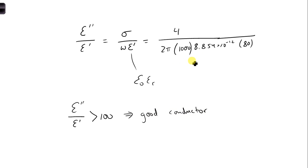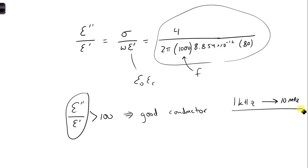If you evaluate this expression and change f, you'll find that the material acts like a good conductor. The ratio is greater than 100 from 1 kHz all the way up as we increase f to about 10 MHz. So over this entire frequency range, this ratio is greater than 100, and we can say the material is a good conductor.